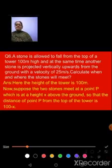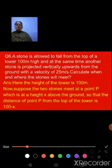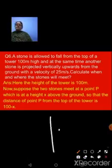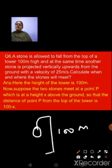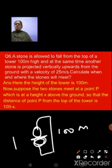The question tells us a stone falls from the top of a tower of height 100 meters, and at the same time another stone is thrown vertically upwards from the ground with a velocity of 25 meter per second. We have to calculate when and where the stones will meet. The height of the tower is 100 meters. Let's assume the point at which the two stones meet each other as point P.